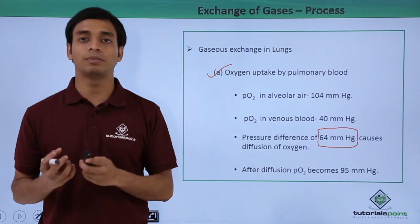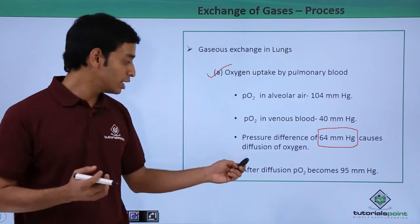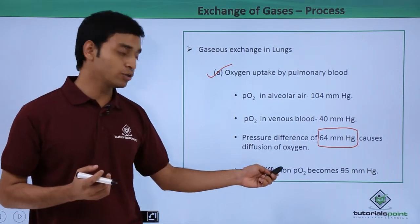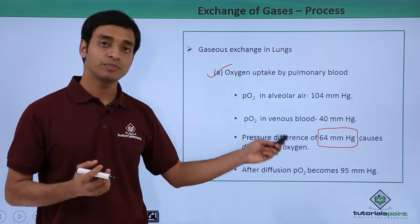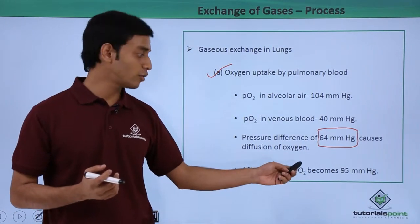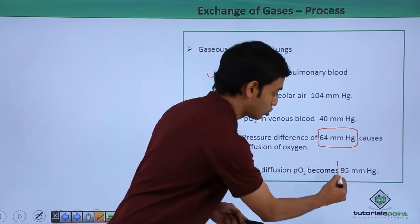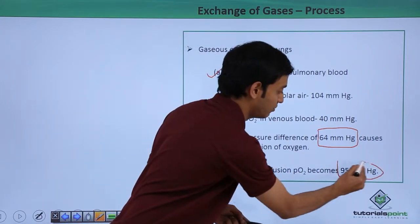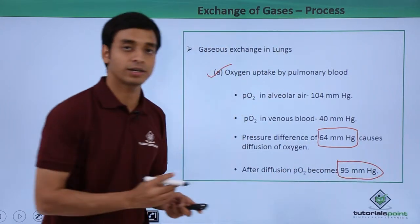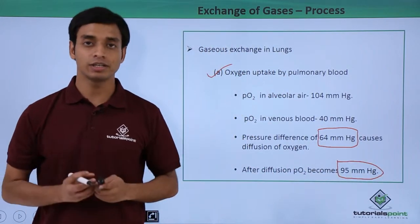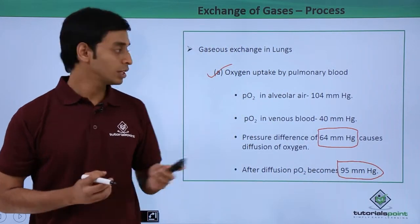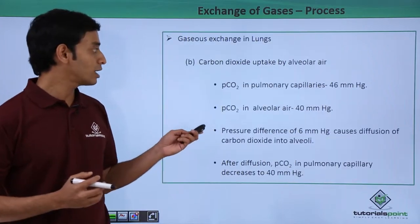After diffusion, the partial pressure of oxygen rises to about 95 mmHg in the venous blood. Now let's see what happens in the lungs during carbon dioxide exchange.